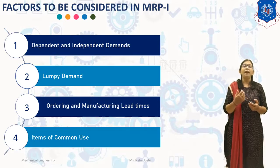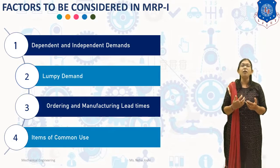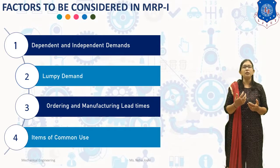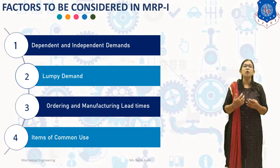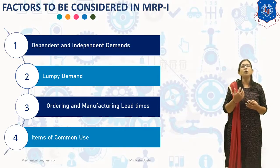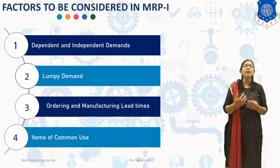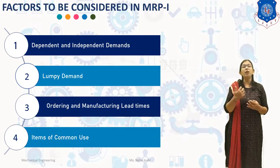The second factor is lumpy demand. In some cases of manufacturing, the demand for the raw material or item will occur at a continuous constant rate. In other cases, the demand will occur in large increments rather than at a continuous constant rate. The large increment corresponds to a contained batch of final product. Such demand in a large increment is known as lumpy demand. MRP-1 is an effective tool in planning for lumpy demand.